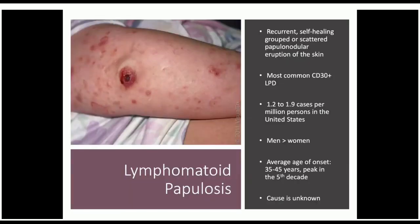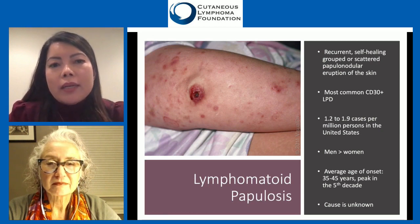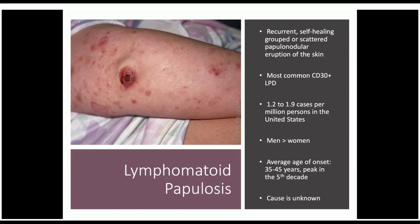Lymphomatoid papulosis is a recurrent, self-healing, grouped or scattered papulonodular eruption of the skin. It is a CD30-positive lymphoproliferative disorder and the most common type, but it is overall very rare, with an estimated incidence of about 1.2 to 1.9 cases per million persons in the United States. There is a predilection for men versus women, and it can occur at any age, though the average age of onset is 35 to 45 years, with a peak in the fifth decade.